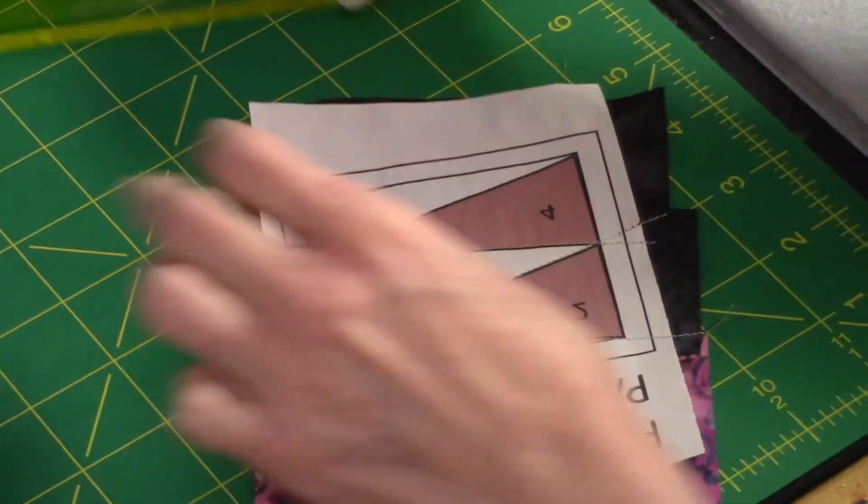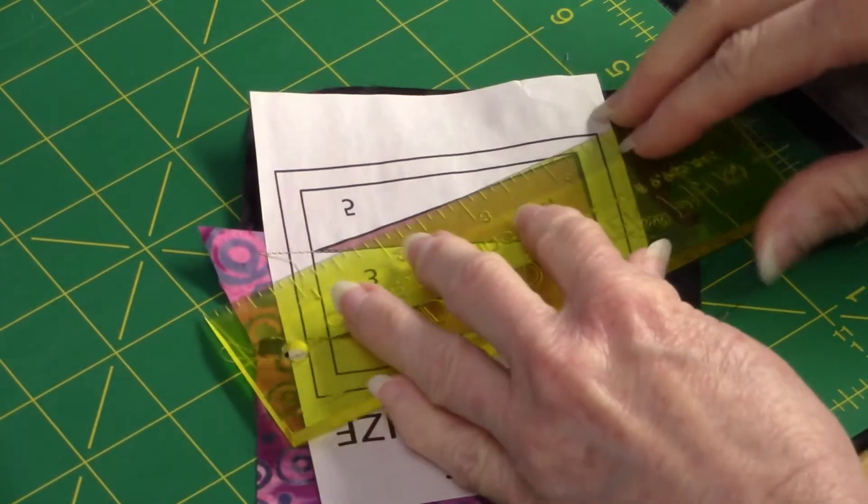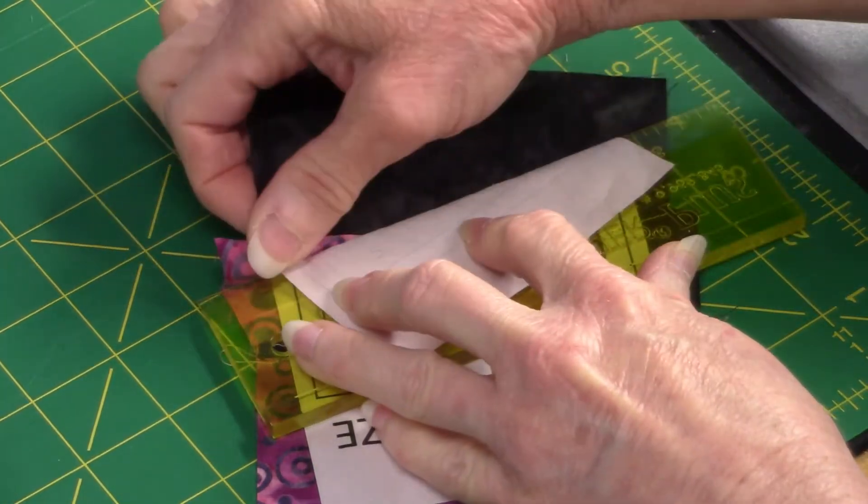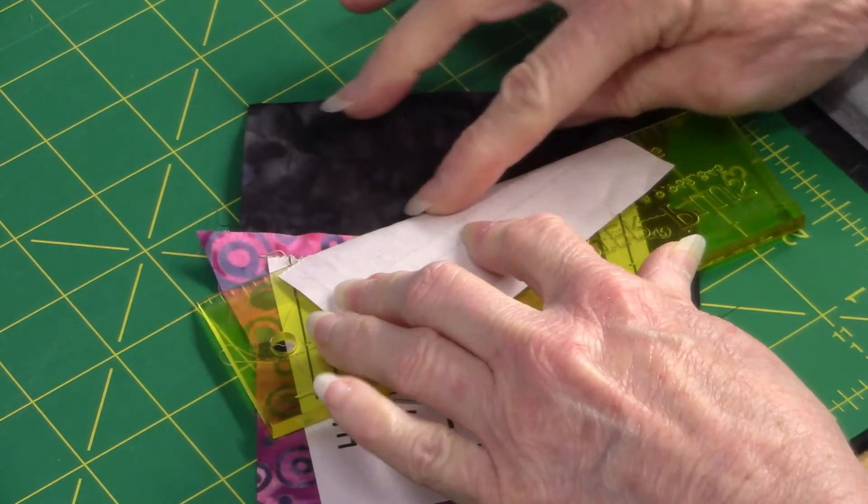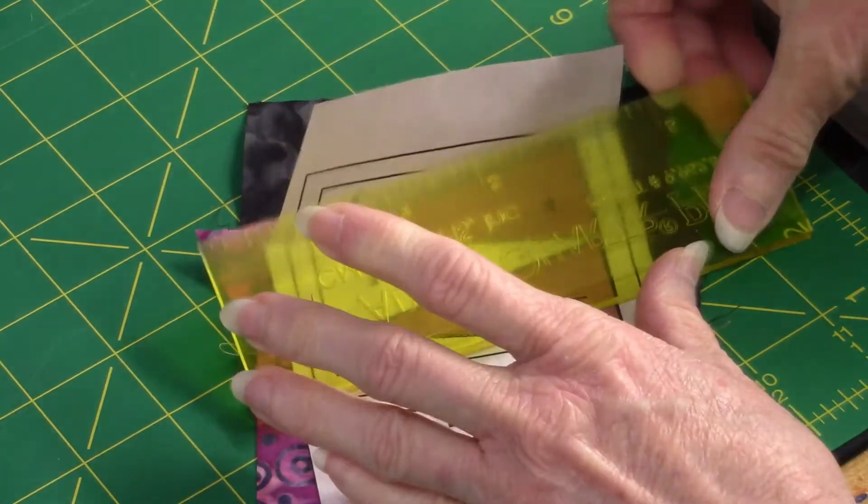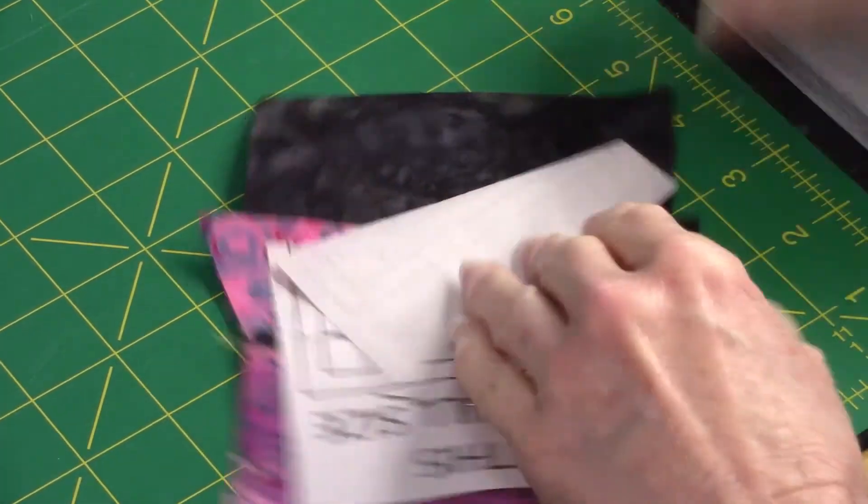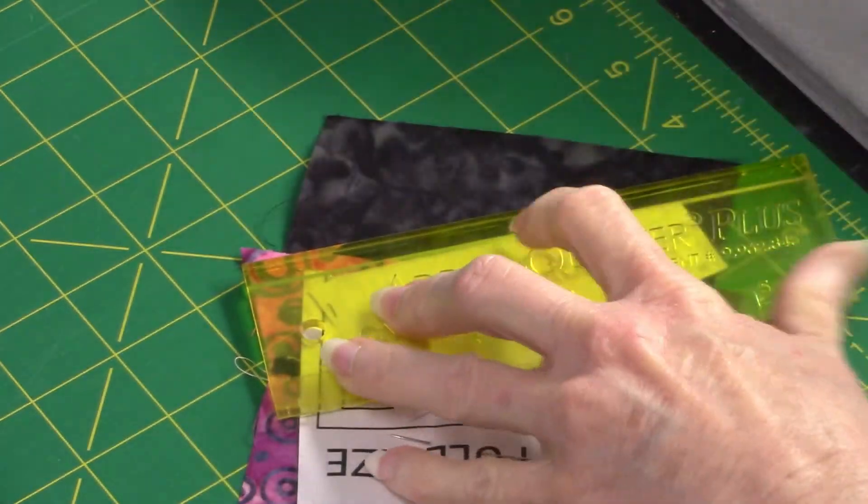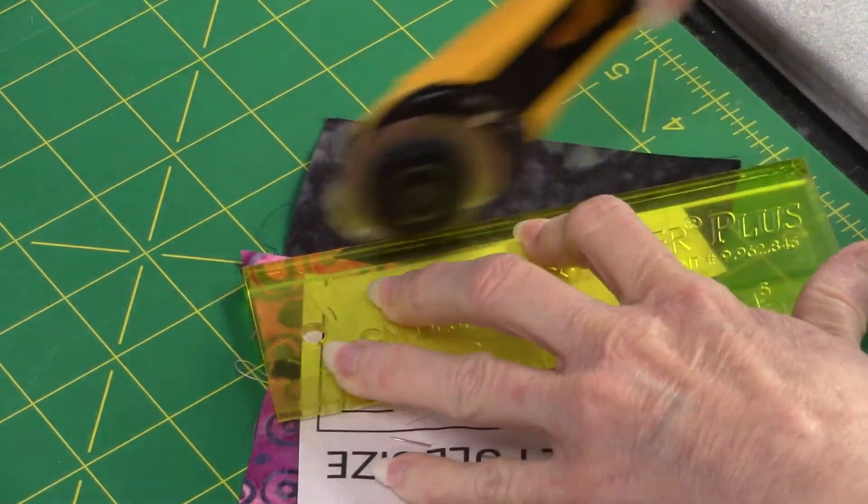Now you're going to take your ruler again, going to put it with the sharp edge down, and you could do it without the ruler by folding it by hand as well if you don't have the ruler. Fold your paper back, put the groove side facing down and trim back your excess fabric.